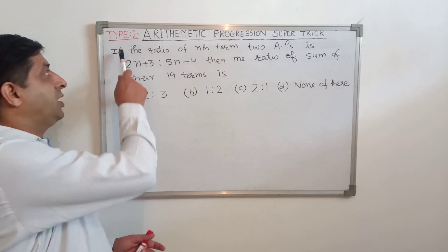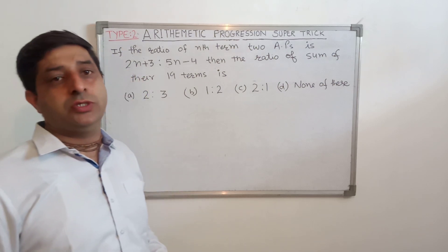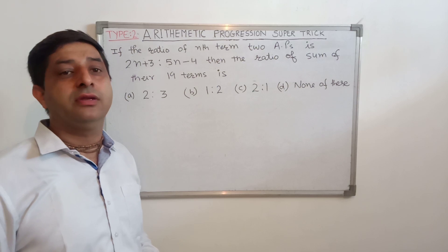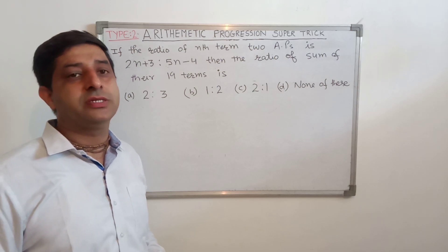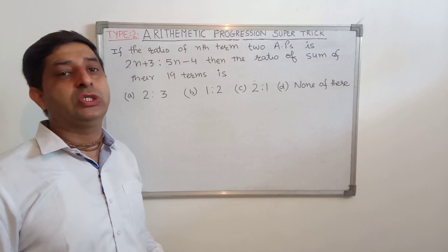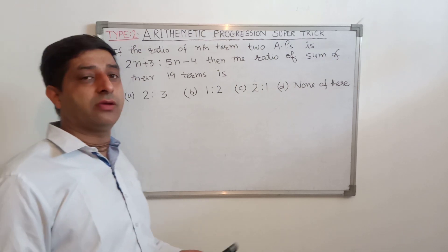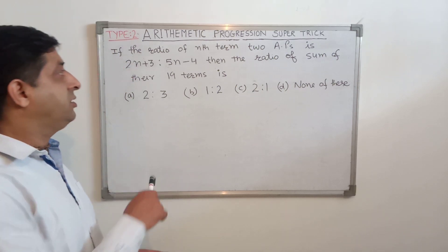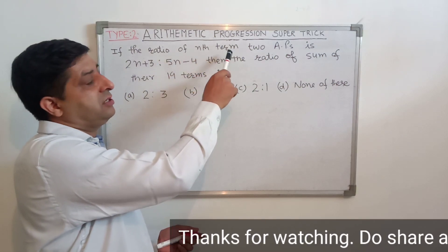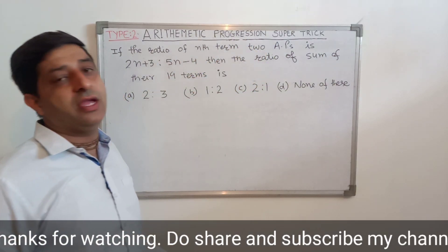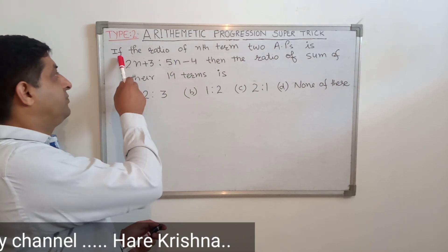Now we will discuss the second type of question. In the previous questions we were given the sum of N terms of 2 APs and we found the ratio of their Nth term or a particular term. Now in this type we are given the ratio of their Nth terms of 2 APs and we find the ratio between their sums.